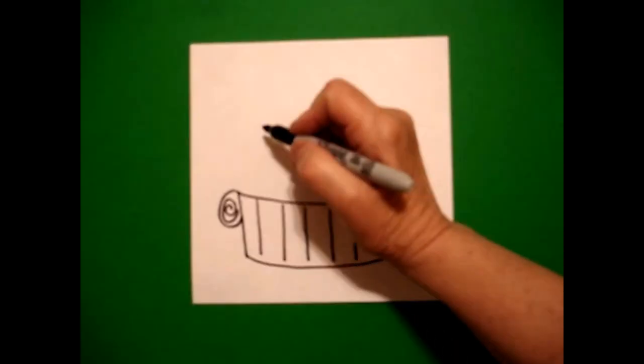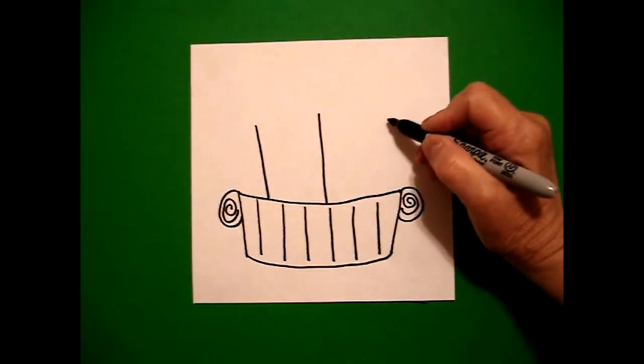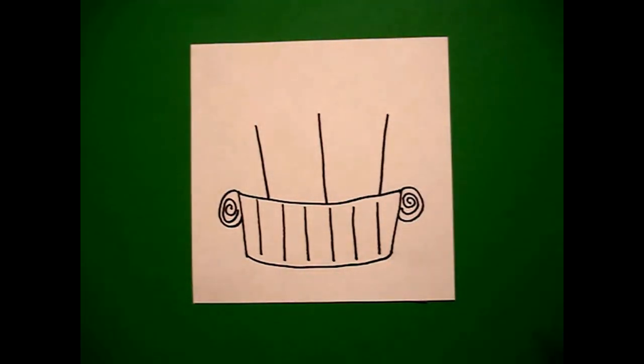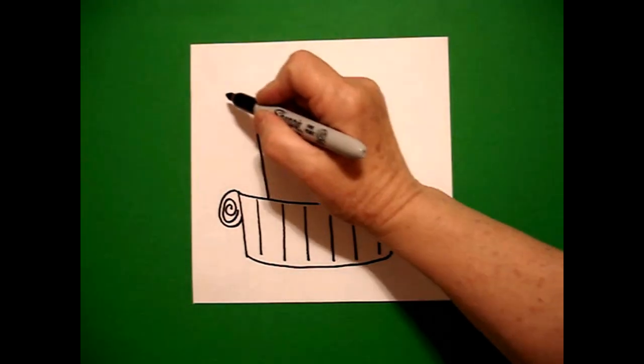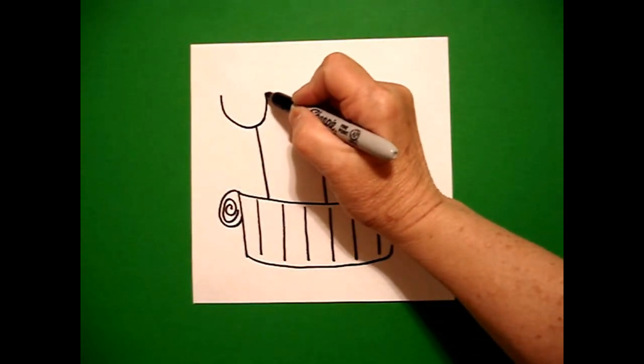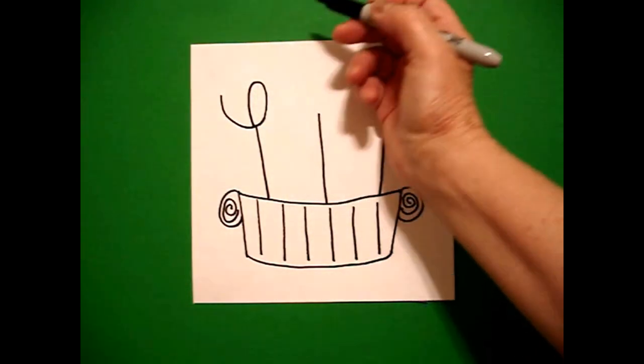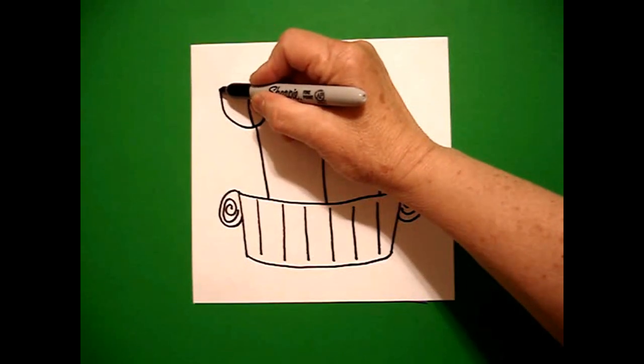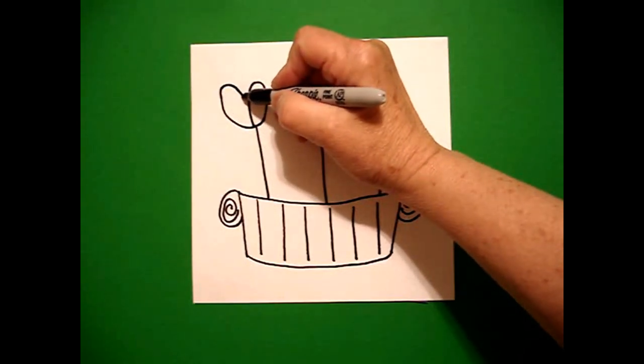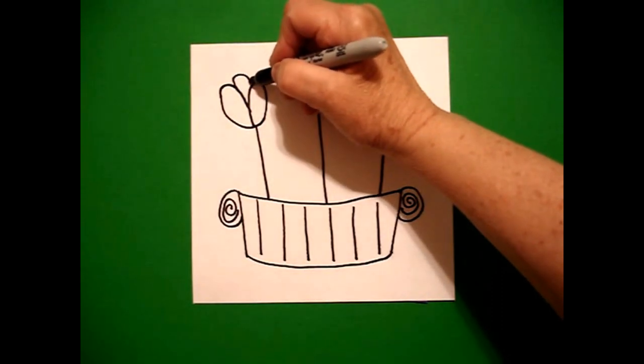Now I come up and I draw one, two, three straight lines. I come up to the very top and I'm going to draw a U and then I'm going to draw a round curve line down, connect. Come back to the left, draw another curve line up, down, connect. And right here in the center, a third curve line.